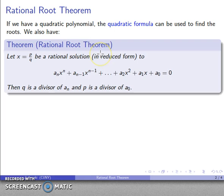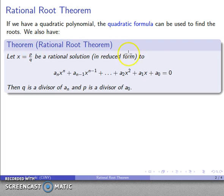Suppose I have a rational solution, already reduced, to some polynomial equation equal to zero. Then the denominator of my rational solution is going to be a divisor of the coefficient of the highest degree term, and the numerator is going to be a divisor of the constant term. Given any polynomial equation, the rational roots must be a divisor of the constant term divided by a divisor of the leading coefficient — and because positive and negative numbers also serve as divisors, they're really plus or minus that quotient.